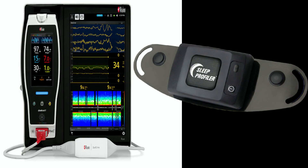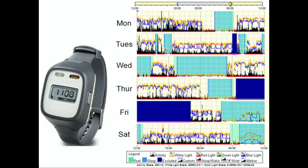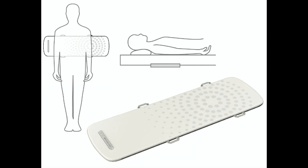Limited-lead EEG devices like SEDLINE™ and Sleep Profiler™ have been trialed but show poor agreement with PSG for stages N1 and N3. Actigraphy uses limb movements to estimate sleep-wake state but overestimates total sleep time and sleep efficiency in ICU settings. Novel devices such as the Nomori Scan, which uses an under-bed mattress sensor, show moderate agreement with PSG but poor specificity.